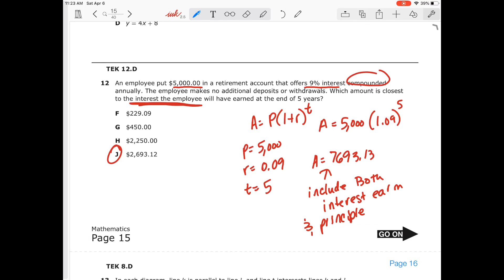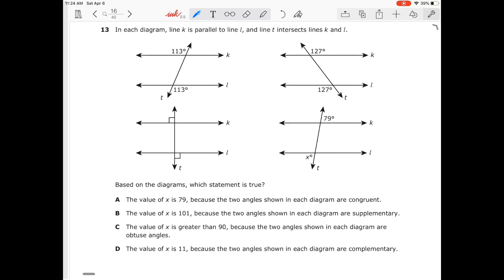Number 13. In each diagram, line K is parallel to line L. And T intersects the lines K and L. Which statement is true? We're looking for true. Let's see. The value of X is 79 because the two angles shown are congruent. Now, let's think about our rules of lines. So we have inside these. We know that these two angles here are supplementary. We know that they won't be congruent. We know that 79 and this angle here would be congruent.